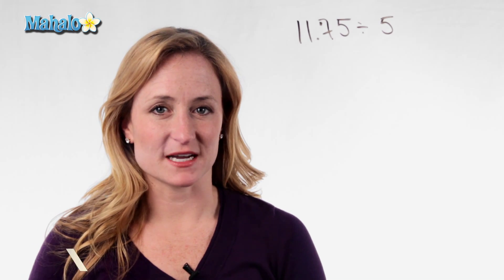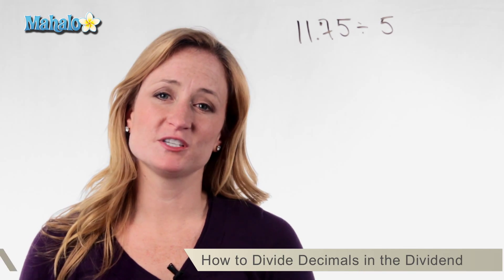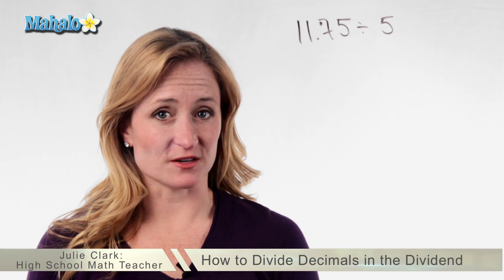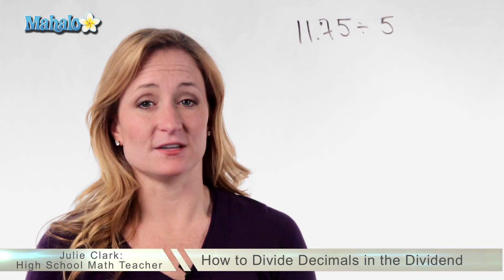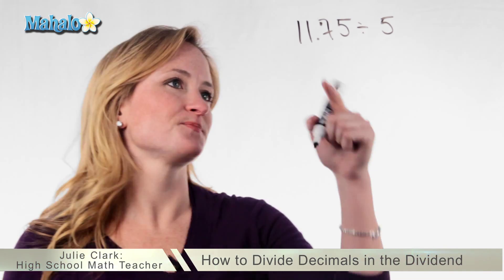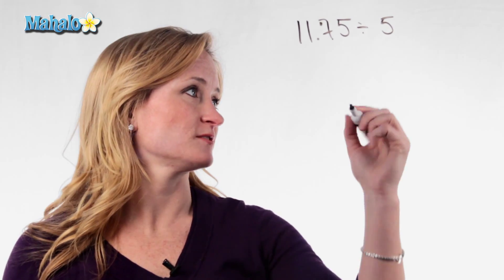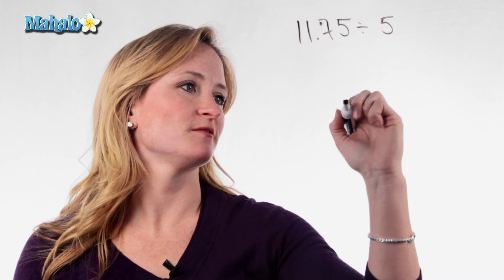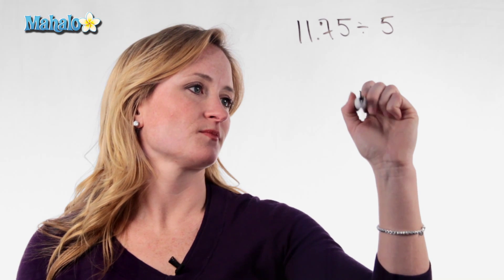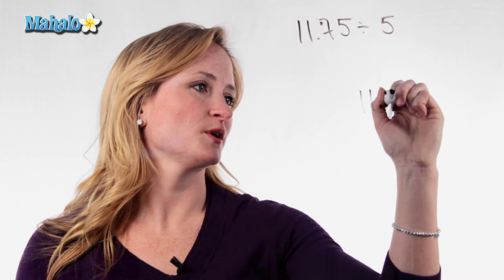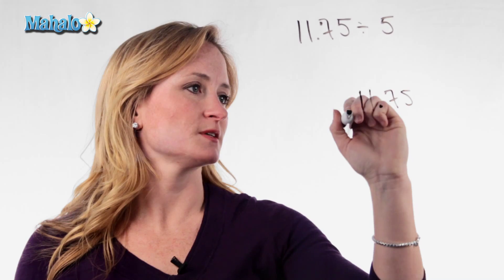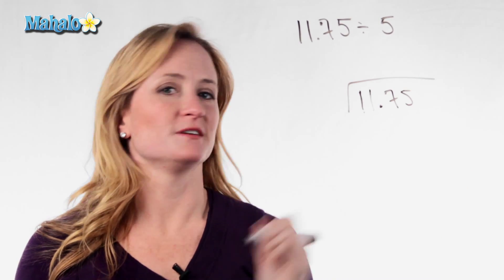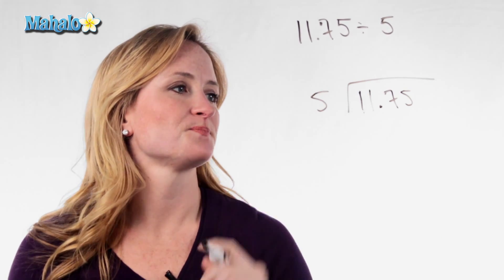Hey, this is Julie with Mahalo.com and today we're going to do some long division with the decimal inside the dividend or the inside of the division sign. So if we have 11.75 divided by 5, that first number 11.75 goes inside the division sign and 5 goes on the outside.